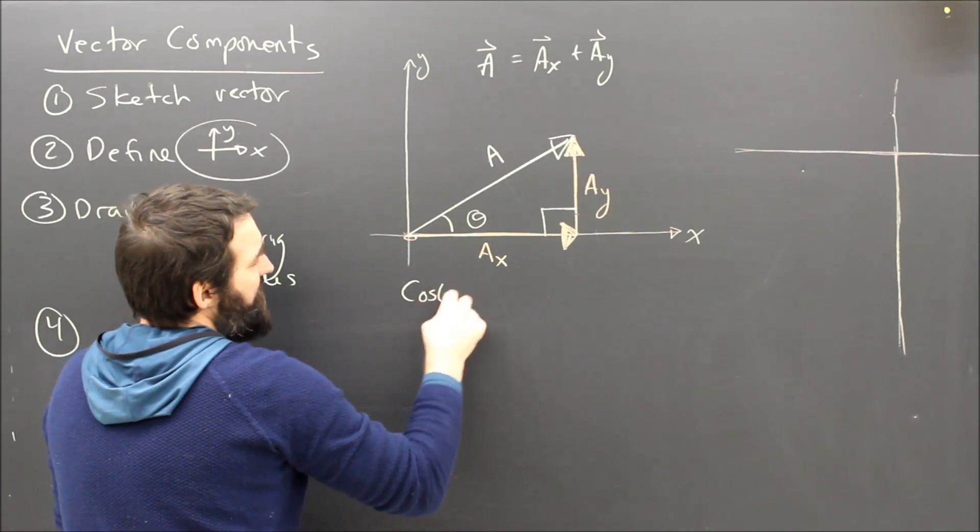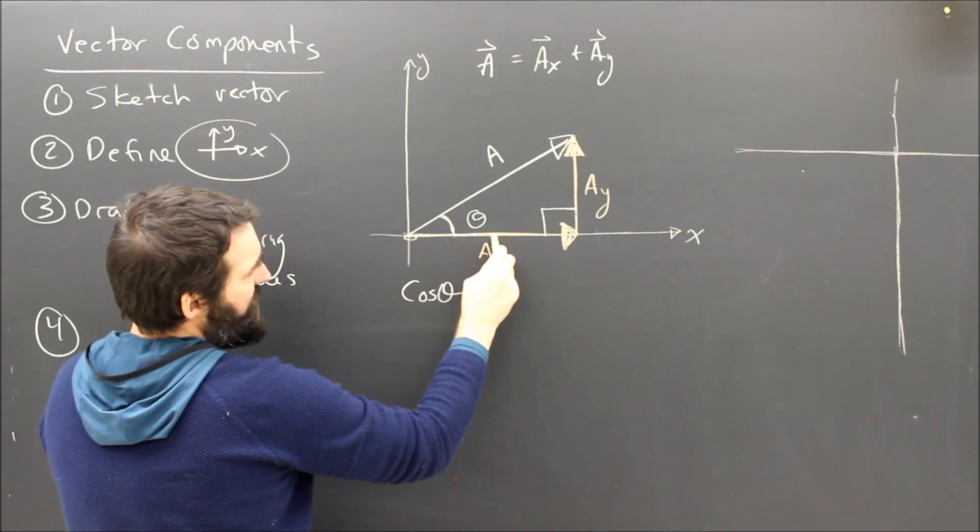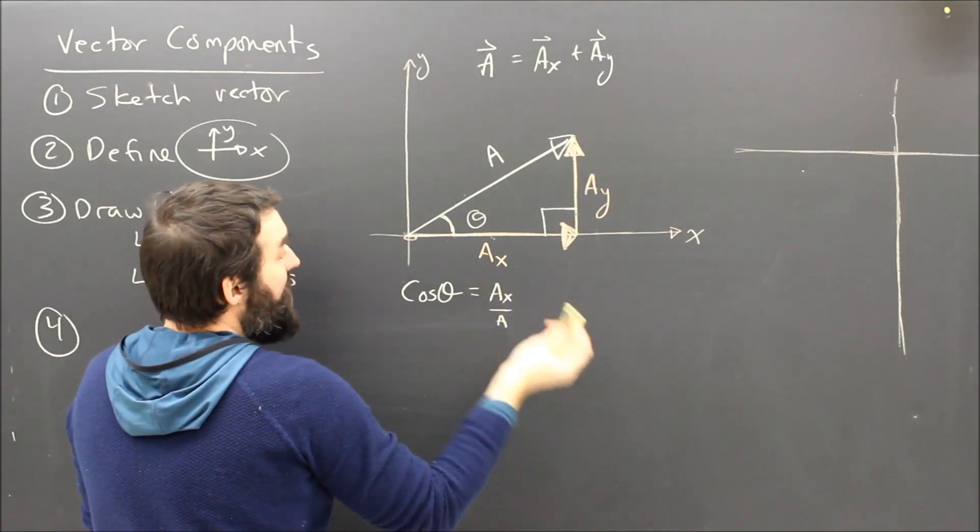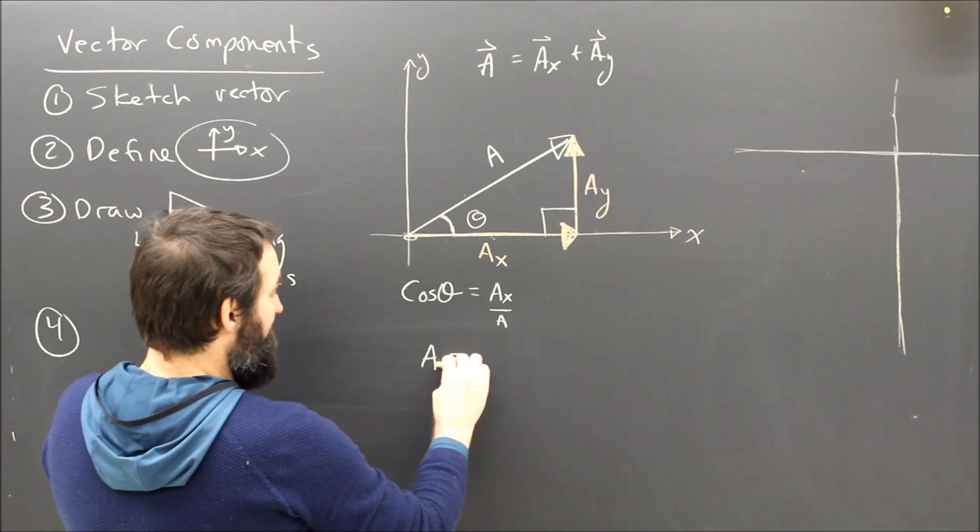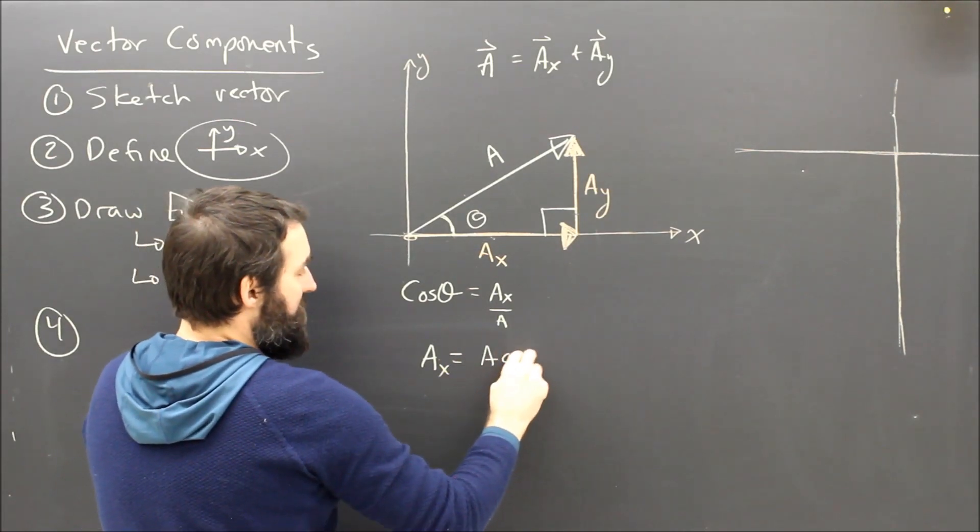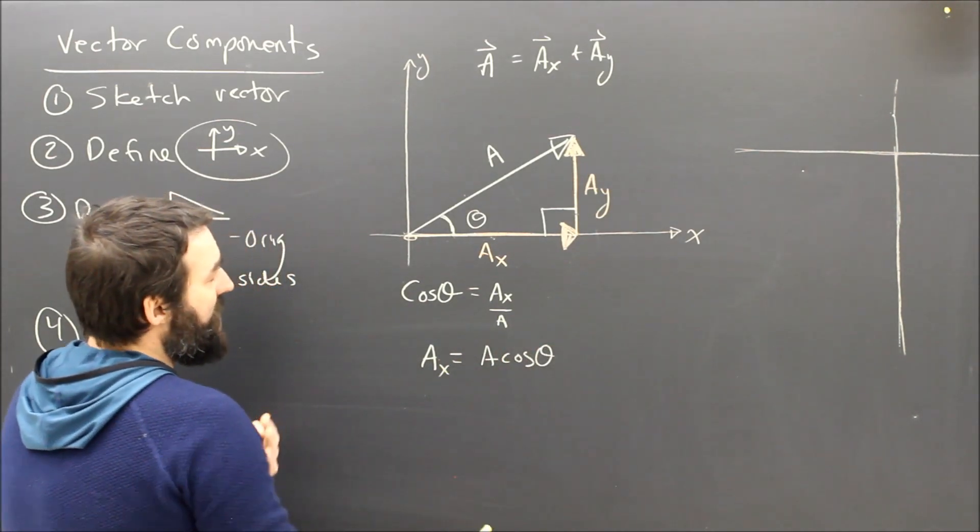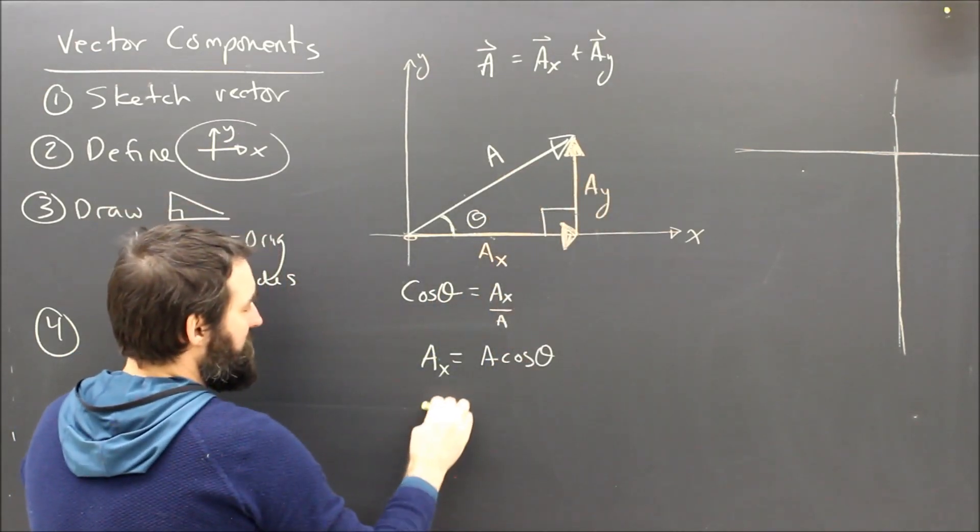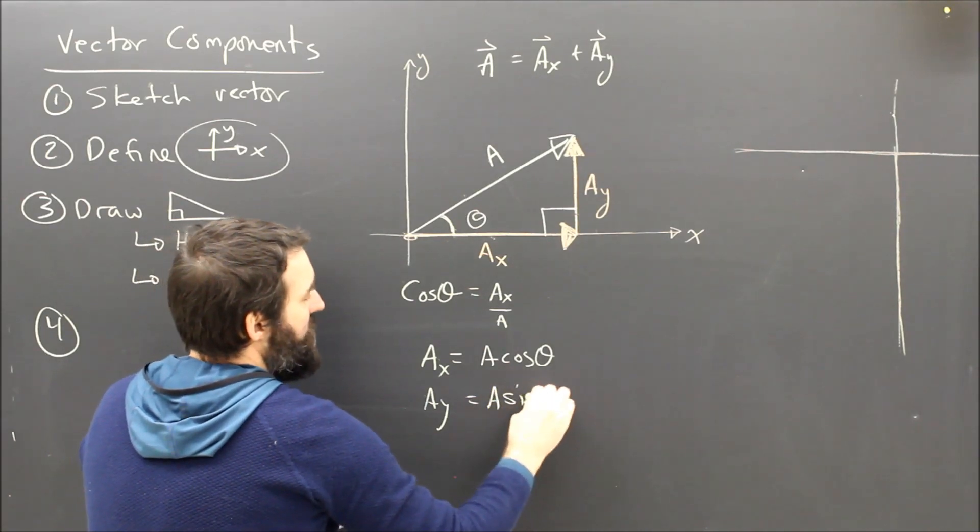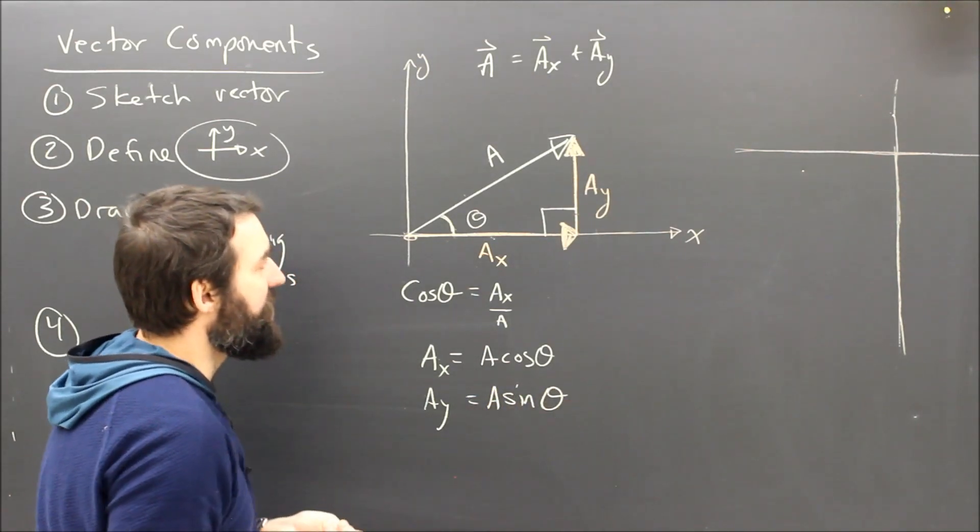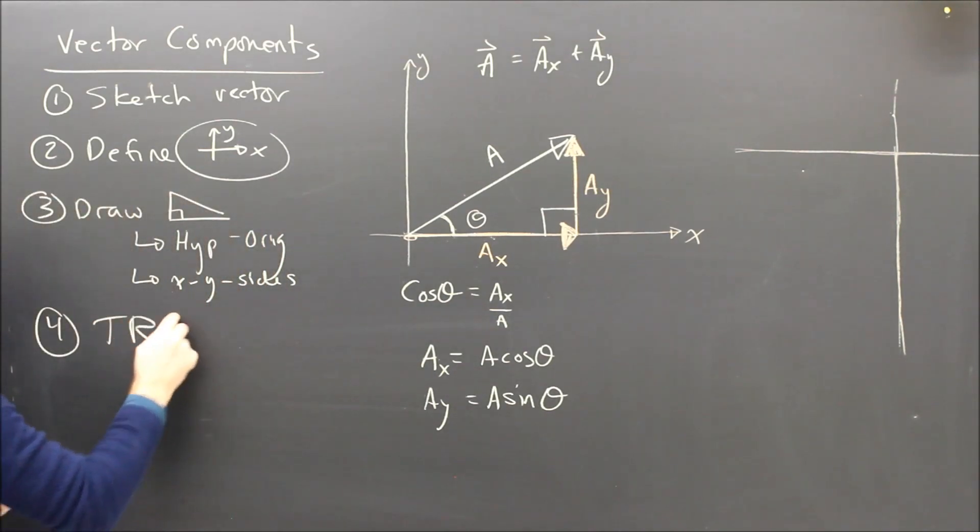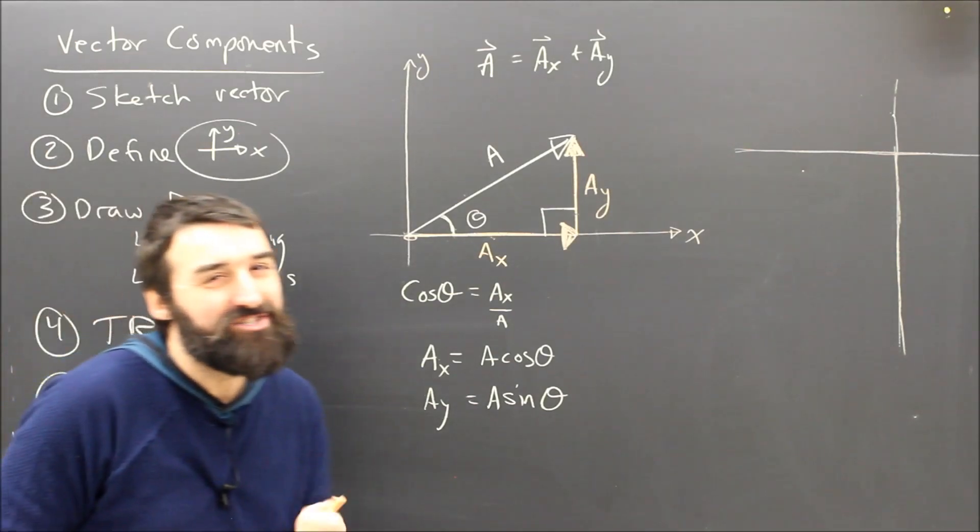So what's the cosine of theta? Well the cosine of this angle would be adjacent over hypotenuse. So Ax over A. And then when I rearrange it, I can see that Ax must be A cos theta. Now I won't be too surprised because the sine of theta is opposite over hypotenuse. Ay will be A sine theta. That's not very difficult. Step number four is to do some trig. Trigification.